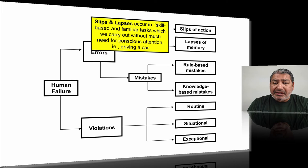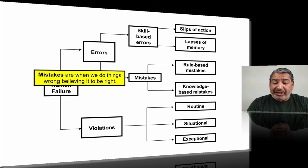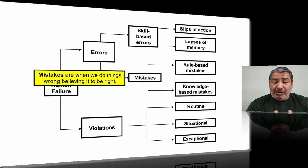We then have mistakes. Mistakes are when we do things wrong believing them to be right. In our world, particularly around personal safety, use of force, and self-defence, this is where people give information that is wrong — it's been handed to them by someone who was handed it by someone else, so it's become a repeated set of incorrect information.